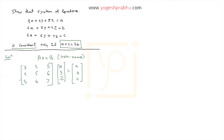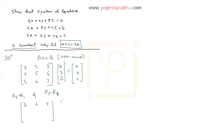Now we reduce the matrix by row transformation. We perform R2 minus R1: the first row stays as 3, 4, 5 with right-hand side a. For R2 minus R1: 4−3 = 1, 5−4 = 1, 6−5 = 1, and the right-hand side becomes b − a.